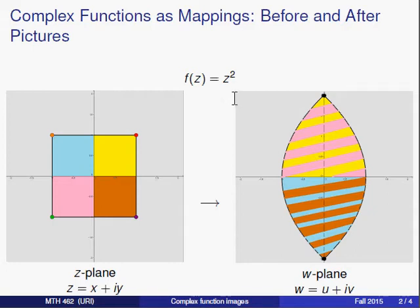For instance, we may take the function f of z equals z squared, take the set S consisting of the points inside and on the square with side length 2 centered at the origin, and ask, to which points in the w-plane do the points in S map?